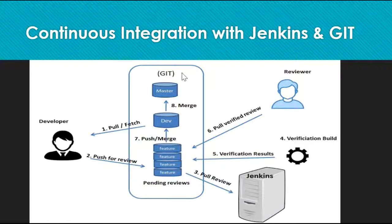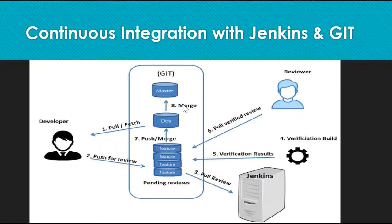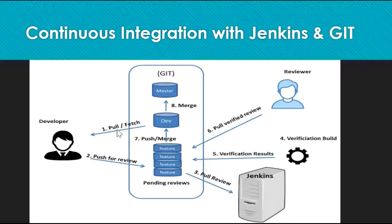This diagram is about how you can manage your source code with Git. For any project, there will be a master branch where all your source code is available. When you want to make changes in your master branch, you have to create a sub-branch from the master branch called development. This is a replica of the master branch — whatever code is in master is the same copy in development. A developer can pull the code from the development branch, make changes locally, test it on their laptop, and once happy with the result, push the code to the Git repository via a new feature branch.